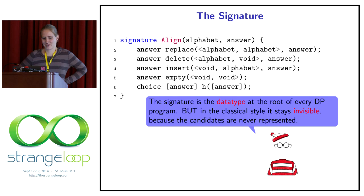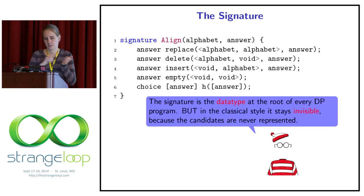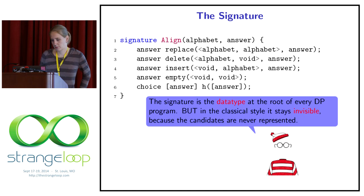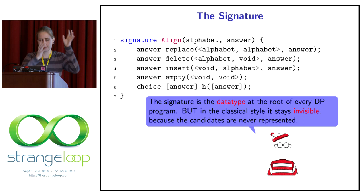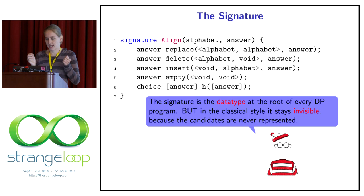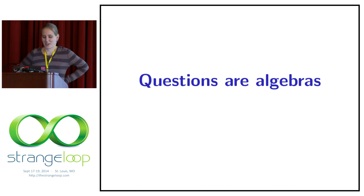Let's talk about the first building block of our programming language: the signature. When we think about the alignment, we wrote down these reoccurring functions for replacement, deletion, insertion — and also the match, which I'll include in replacement from now on because it has the same number of arguments — and then there's the empty thing and the choice function. This is an abstract description: we don't know what the answer looks like but we know it has this kind of form. The signature is a data type at the root of every dynamic programming problem. In the normal dynamic programming approach, these candidates are never represented, but in our style we can write it down and it helps us reason about the problem.